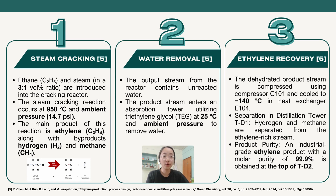First is the steam cracking. Ethane and steam in a 3 to 1 volumetric ratio are introduced into the cracking reactor at a temperature of 950 degrees Celsius and ambient pressure. The main product of this reaction is ethylene, along with by-products hydrogen and methane.